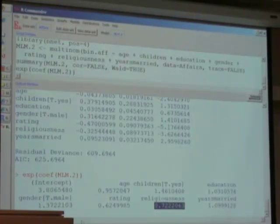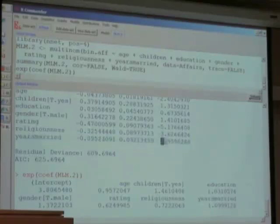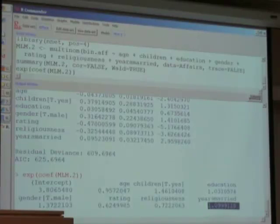And the coefficient for years married suggests that it's statistically significant, and it suggests that for an additional year in marriage, you are 9 percent more likely to have an affair. So it turns out that there is some truth to the longevity of marriage increases the odds of having an affair, which is pretty much stated here.